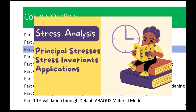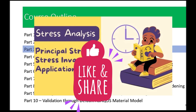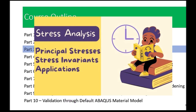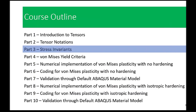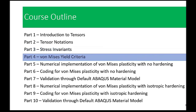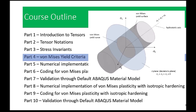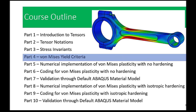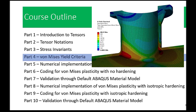Part three is all about stress invariants. We will learn how these invariants can be used to determine the state of stress within a material — understanding stress invariants is crucial in predicting material failure and ensuring structural integrity. In part four we will introduce you to the Von Mises yield criteria, a fundamental concept in material science, and explore its applications in determining the yield strength of the material.